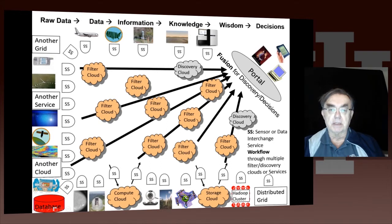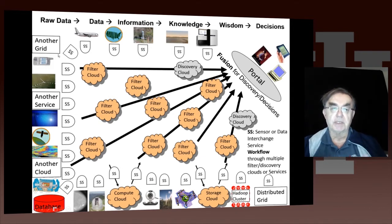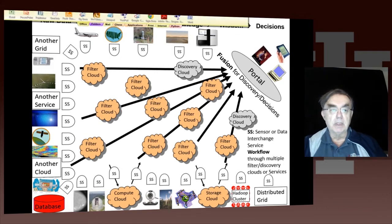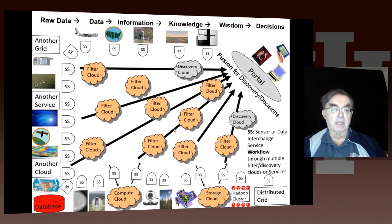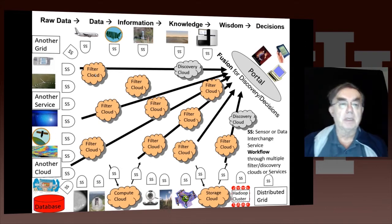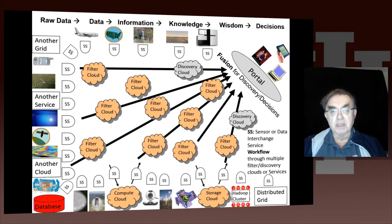Around the top, left, and bottom we have typically sensors or other so-called services — a service is anything which receives messages and outputs messages. These sensors, along with Hadoop clusters, grids, compute clouds, webcams, telescopes, databases, LHC detectors, satellites, all pour out data. Those data go through analytics that live in so-called filter clouds. A filter is here the same word as 'map' in MapReduce — you could actually call it FilterReduce. Filters take data and make new forms of data.